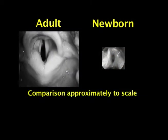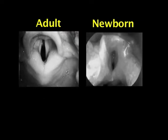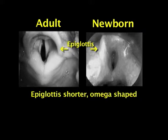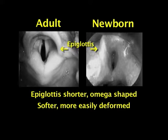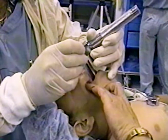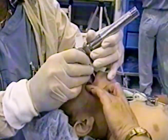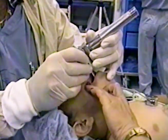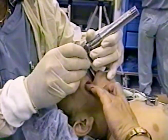The larynx is not only smaller than the adult's, it's also anatomically different. The epiglottis is shorter and more omega-shaped, making it harder to pick up with the laryngoscope blade. It's softer and more easily deformed. In the adult larynx, the gap through the vocal cords is the smallest diameter. However, in a young child, the smallest diameter is the cricoid cartilage, which is below the vocal cords. This means that you can occasionally pass an endotracheal tube through the vocal cords but then not through the cricoid ring into the trachea. Never force a tube to pass — instead, switch to a smaller tube.